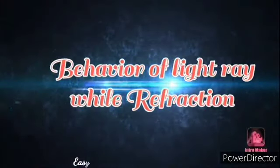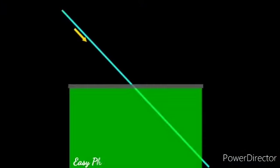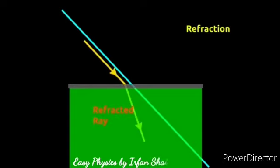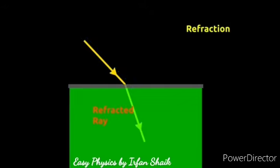When a light ray travels from one medium to another, it doesn't travel in the same direction — it bends. This is called refraction and the bent ray is called a refracted ray. The perpendicular line striking on that point is called the normal. Light can bend towards or away from the normal line.